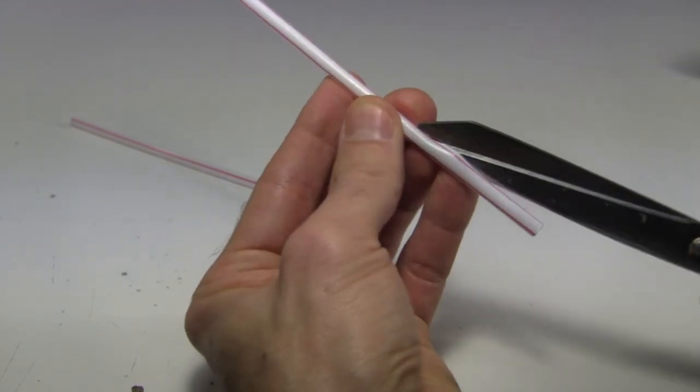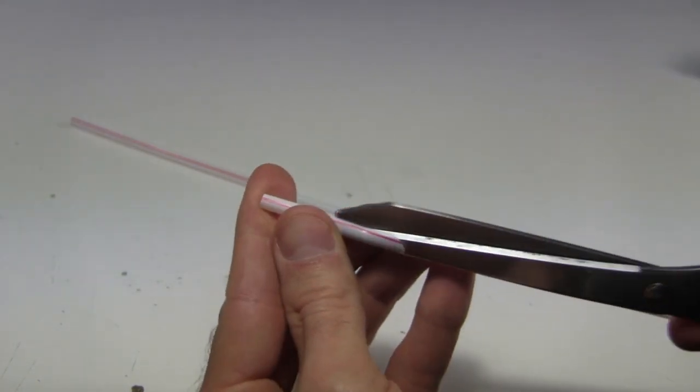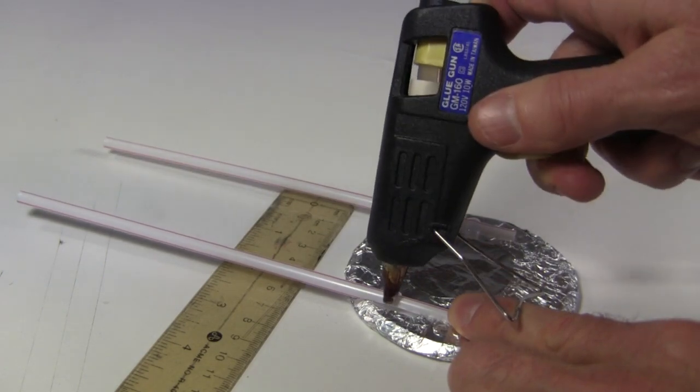I then cut some straws like this. I'm using these straws because they're plastic and plastic is not electrically conductive. I hot glue them to the disc, taking care to see that they're parallel to each other.